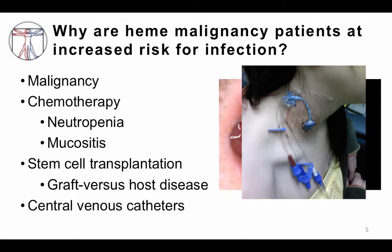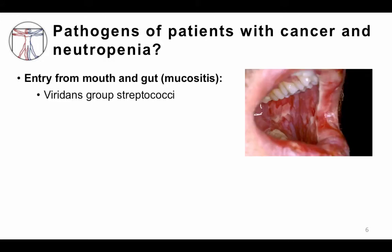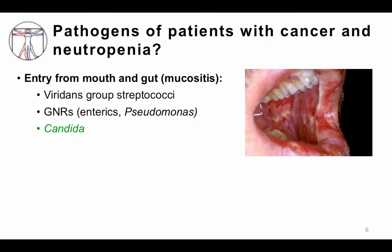This is a patient with a right internal jugular catheter. What are the pathogens we think about in patients with cancer and neutropenia? Mucositis opening up a portal of entry in the mouth and gut can predispose to mouth organisms such as viridans group streptococci, a common cause of bacteremia in patients with mucositis. The normal bacteria in the mouth change with chemotherapy and antibiotics, and gram-negative rods like E. coli or Pseudomonas may become important pathogens. Candida, which normally lives in the gut, becomes overgrown with antibiotic use, making infection more likely.